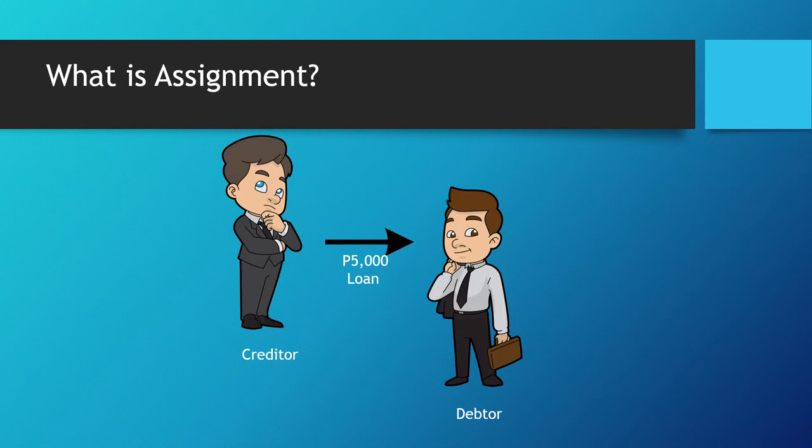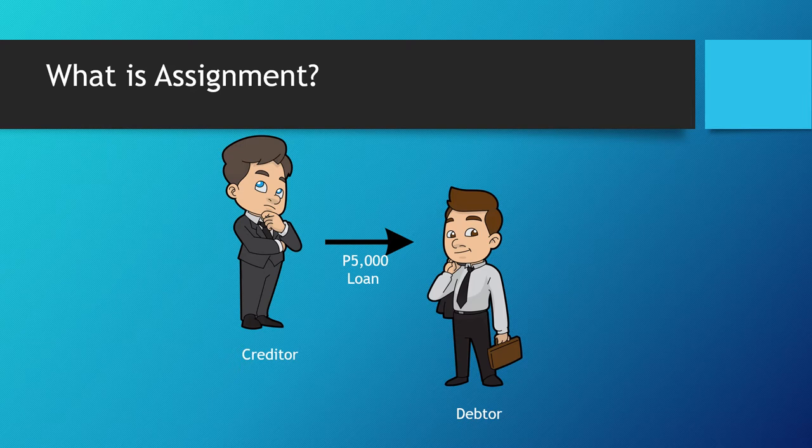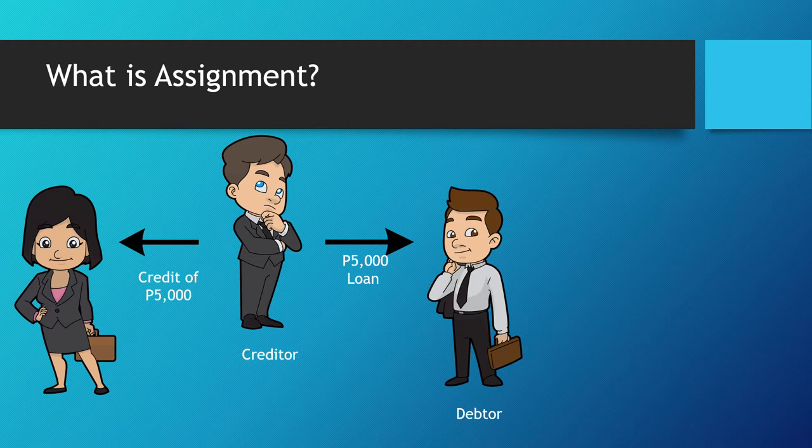In this case, assignment happens when John transfers his right as creditor to a third party — Jane in this case. In the assignment, John has become the assignor to assignee Jane, who would then have the right to proceed against the debtor James for the $5,000.